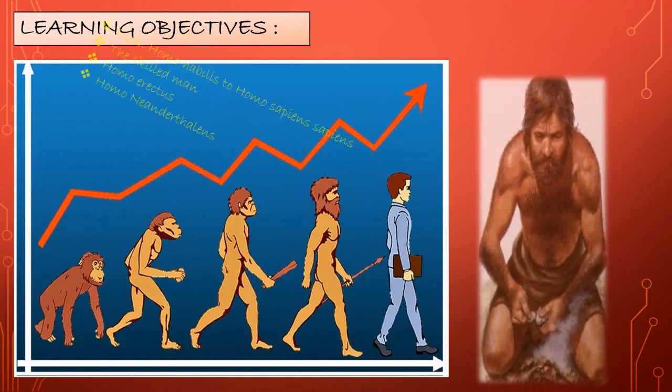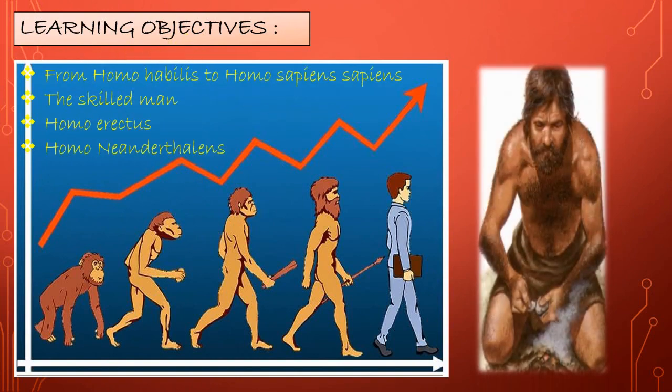The learning objectives of our chapter Evolution of Mankind, Module 1, cover Homo habilis to Homo sapiens sapiens - the skilled man, Homo erectus, and Homo neanderthalensis.